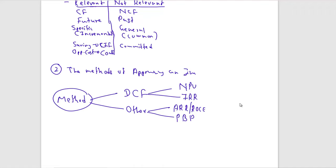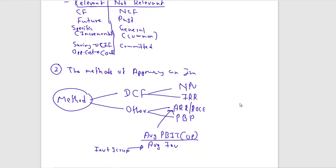To calculate ARR: take average profit before interest and tax (operating profit) divided by the average investment. Average investment equals (investment amount + scrap value) divided by 2. Each method has specific advantages and disadvantages that you need to know.